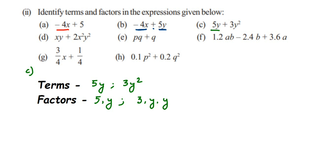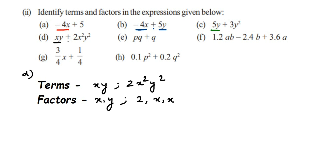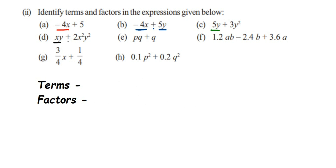Fourth expression: xy plus 2x square y square. The terms are xy and 2x square y square. For xy, the factors are x and y. For 2x square y square, 2 is the numerical coefficient, x square means x into x, and y square means y into y, so the factors are 2, x, x, y, y. Next expression: pq plus q. Two terms are present: pq and q. In pq, two variables p and q are multiplied, so the factors are p and q. For the second term, there is only one variable, so its factor is q.